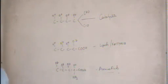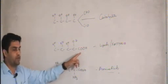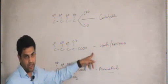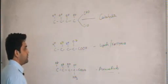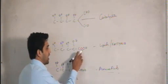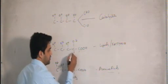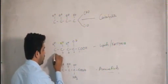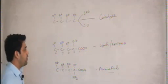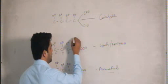Whenever we number a carbon chain, we always number it from the carboxylic acid carbon. That carboxylic acid carbon is carbon 1, then 2, 3, 4, 5, and so on.